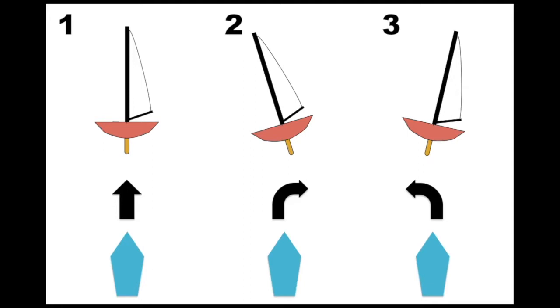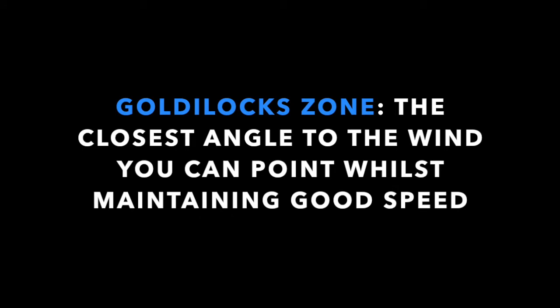Upwind speed has a lot to do with something called boat balance. A balanced boat is a boat that is being sailed flat. The problem with an unbalanced boat is that you struggle to stay in the Goldilocks zone and that struggle will slow you down.